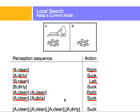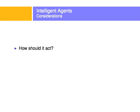An agent might perceive a bunch of things while taking an action. It perceives room A is clean, starts going right, keeps perceiving room A is clean, and just as it's about to enter room B somebody drops a glass and it perceives room A is dirty — so it stays and sucks. The sequence of perceptions might be A-dirty, A-dirty, A-dirty for a while before it perceives A-clean. So there's a sequence of percepts and the agent might act on a sequence or on a single perception.